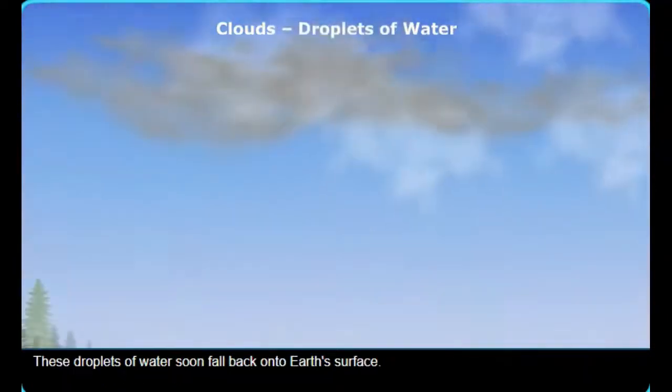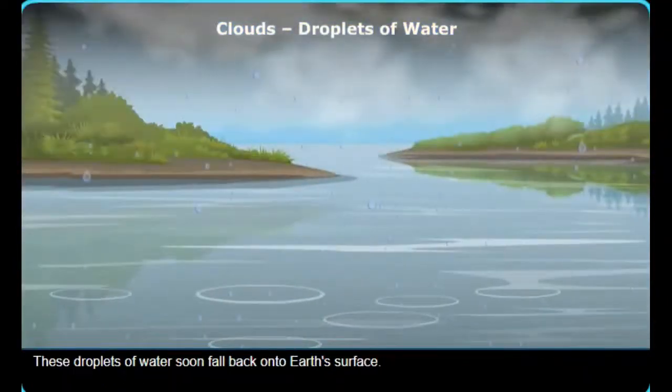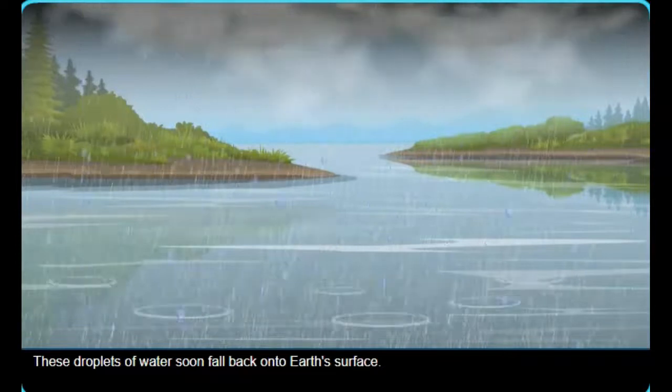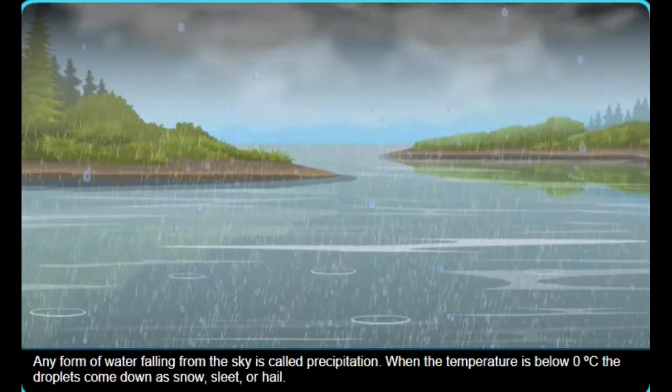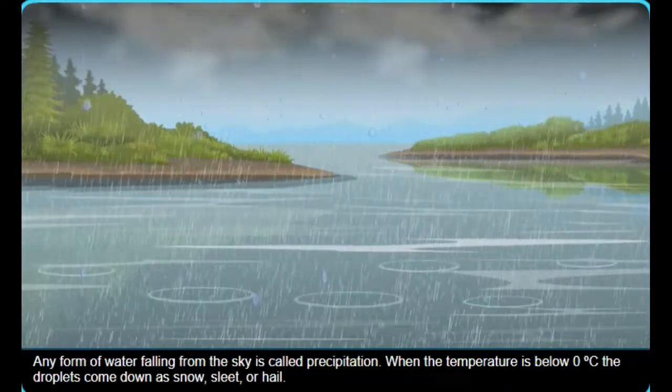These droplets of water soon fall back onto Earth's surface. Any form of water falling from the sky is called precipitation.